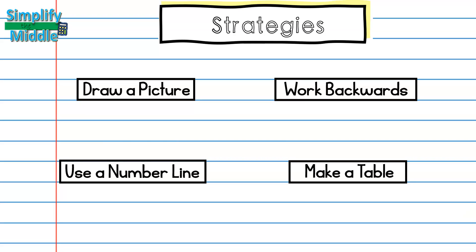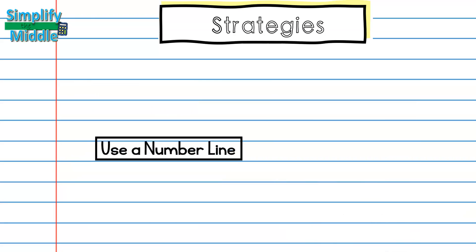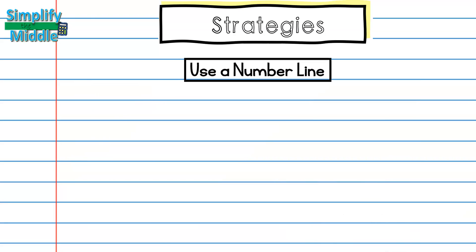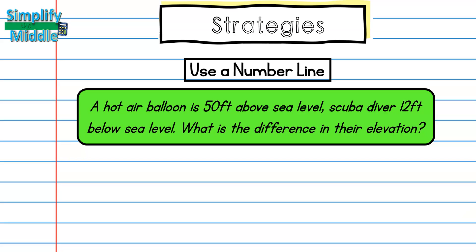Going back to my four strategies, let's take a look at the use a number line strategy. Here my word problem says a hot air balloon is 50 feet above sea level, scuba diver 12 feet below sea level, what is the difference in their elevation?